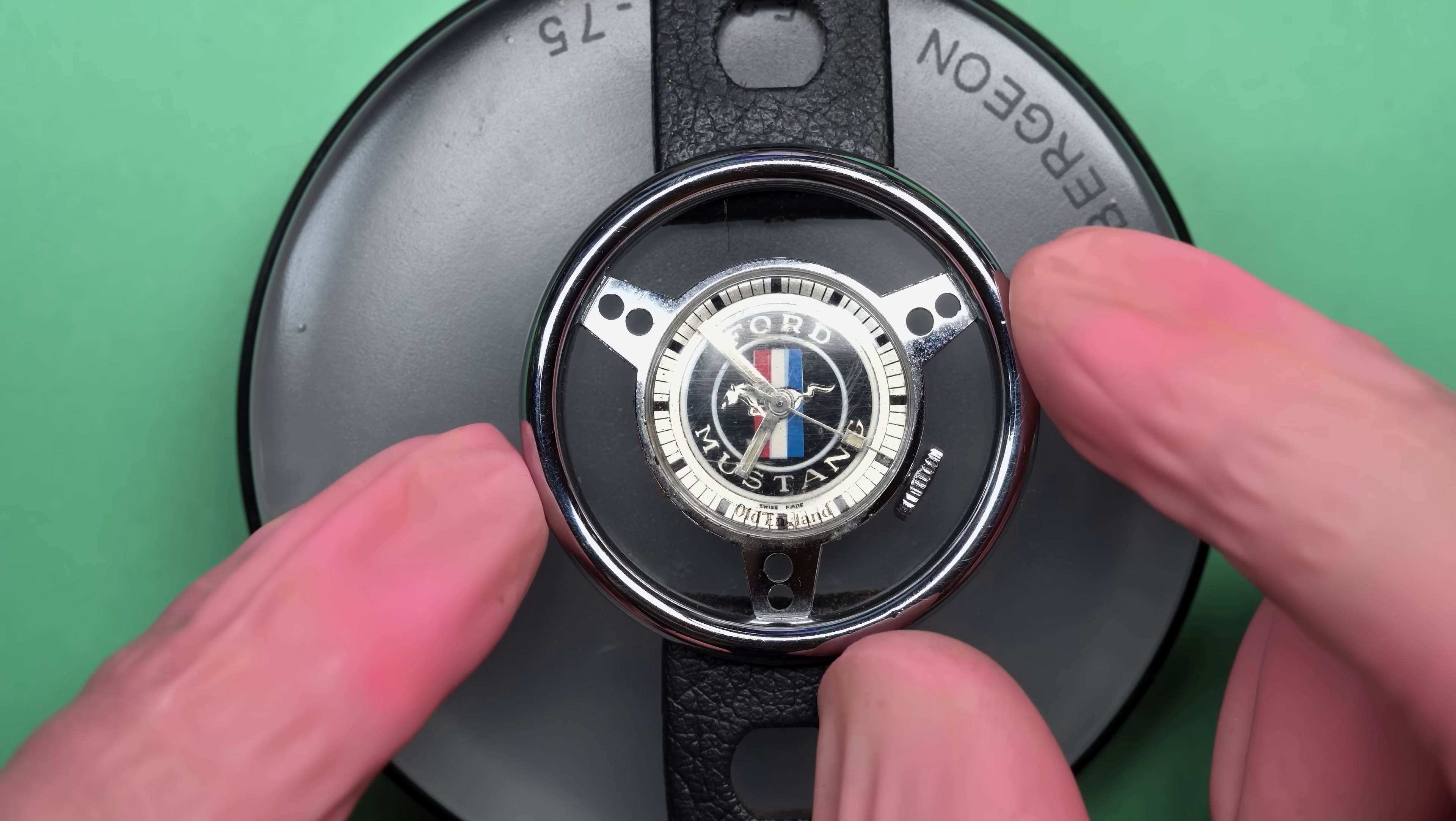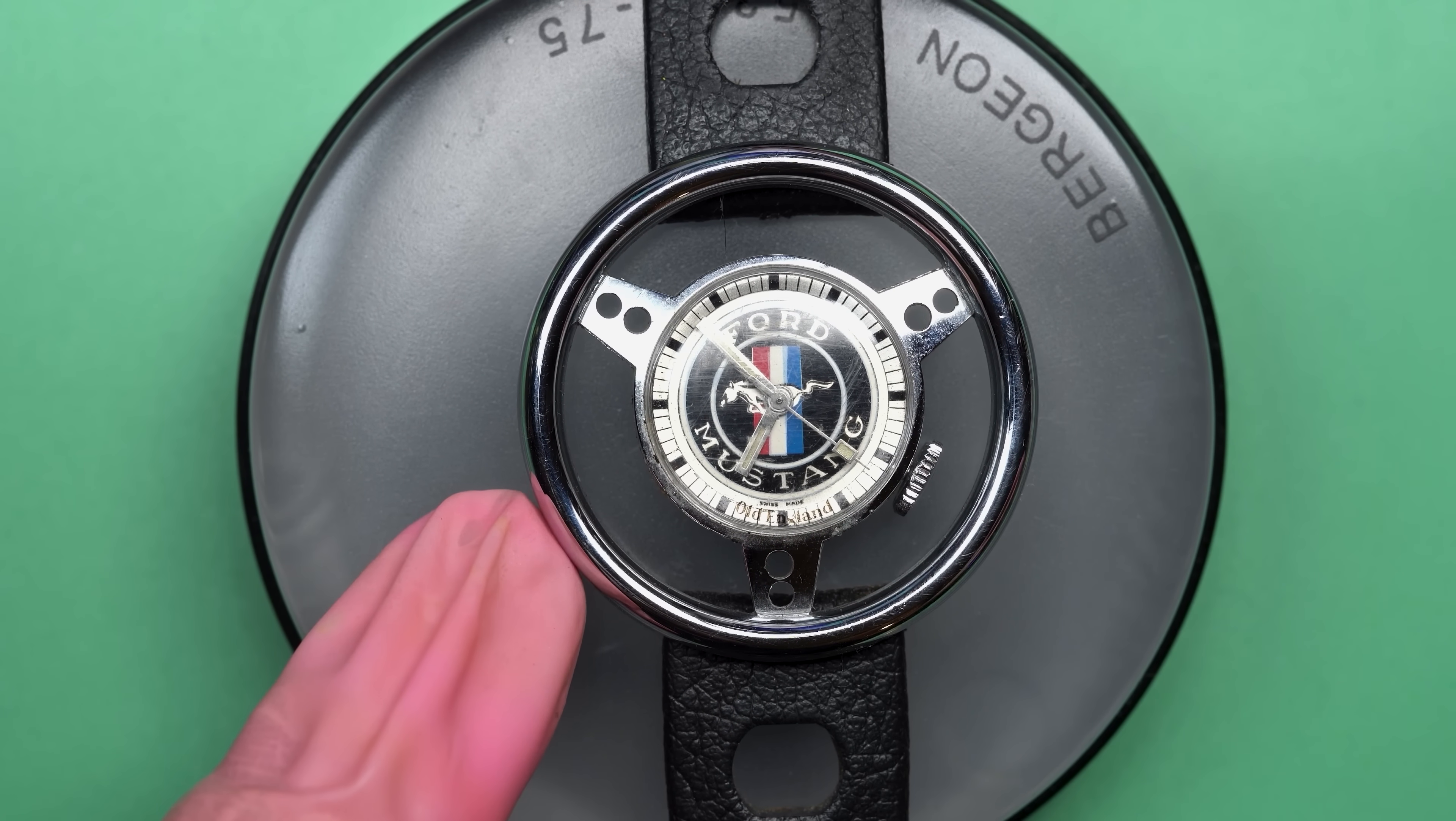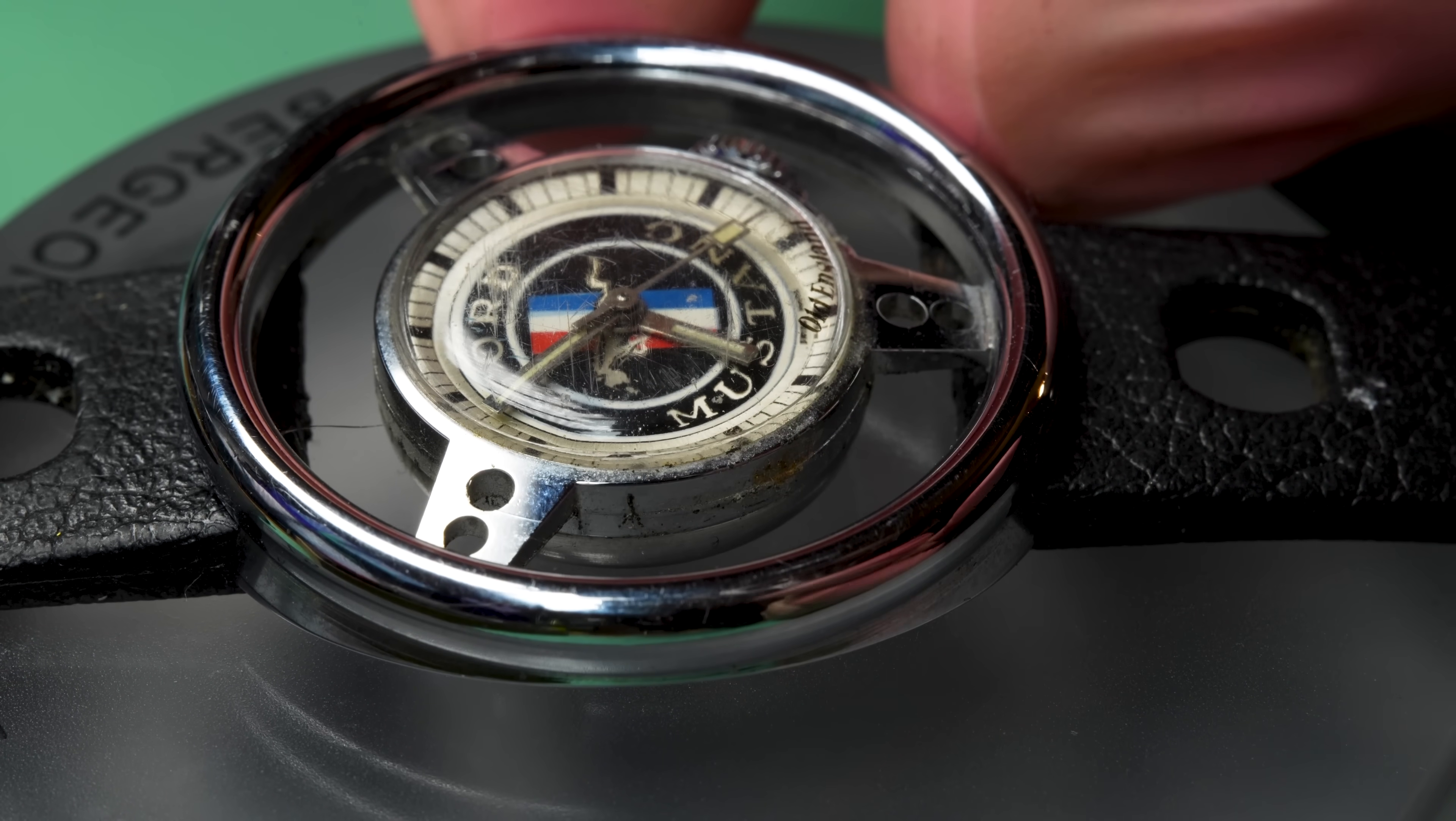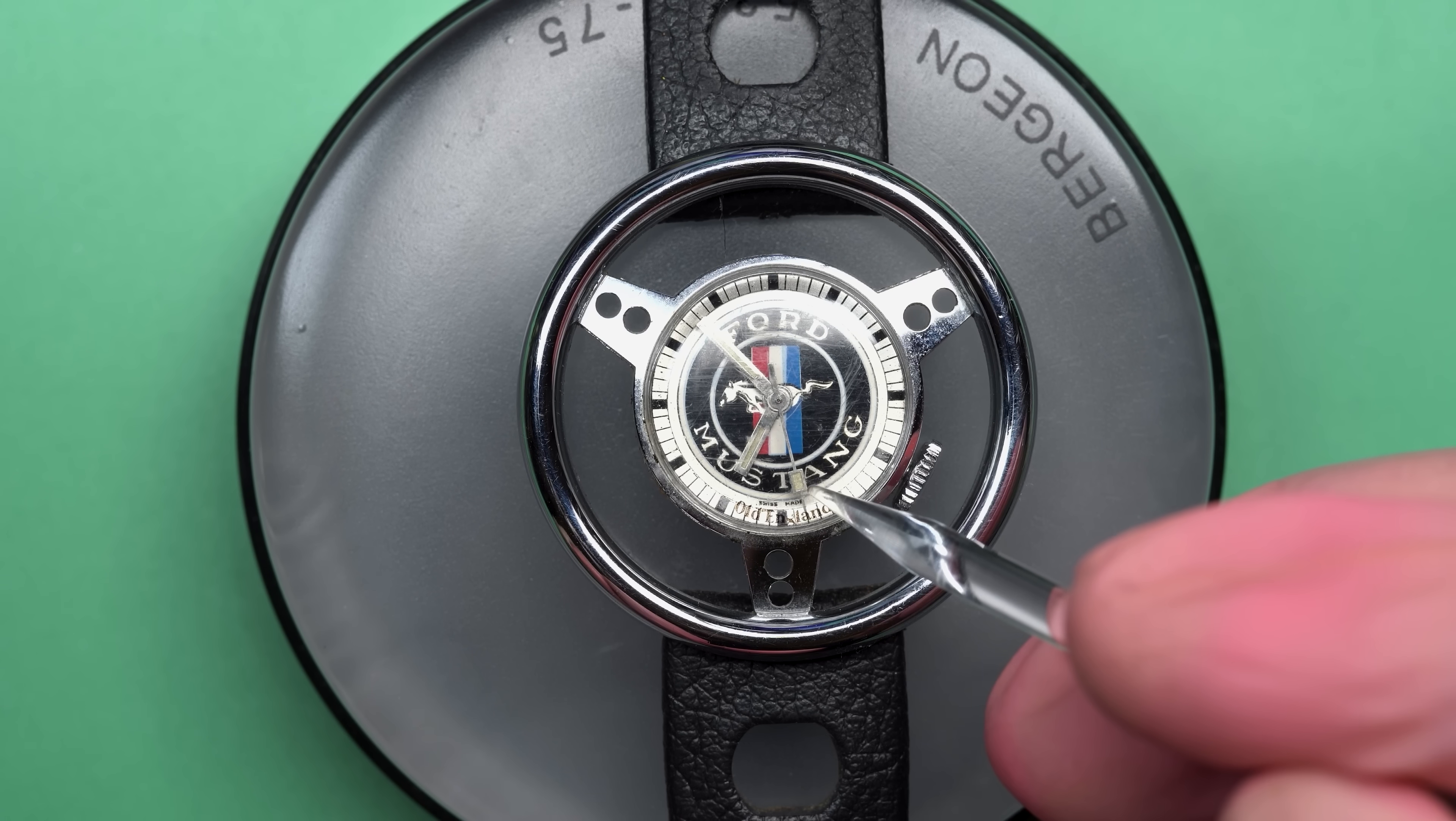Hello there and welcome back to another video here on Wrist Watch Revival. My name is Marshall. Thank you so much for coming along. This time on the bench we have this kind of funny Ford Mustang novelty watch. The outside is like a steering wheel from a Mustang and then the inside has the logo for it. As you can see it is running a little bit too.